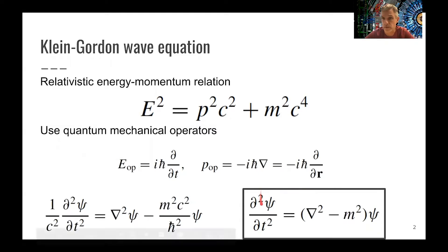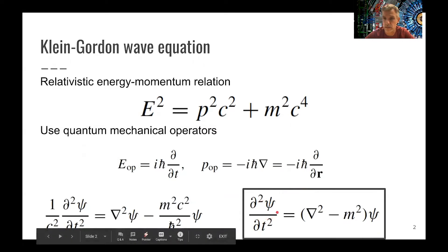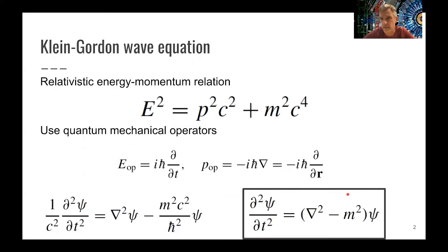So if you look at this equation, we see that the second derivative here in time, there's no derivative in space. So there's an asymmetry between space and time. And that is not a really useful feature of our wave equation as we want them to be Lorentz invariant.